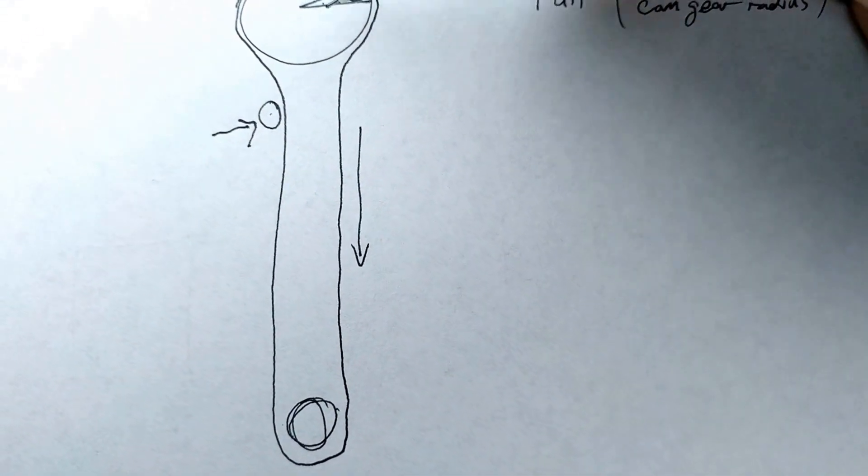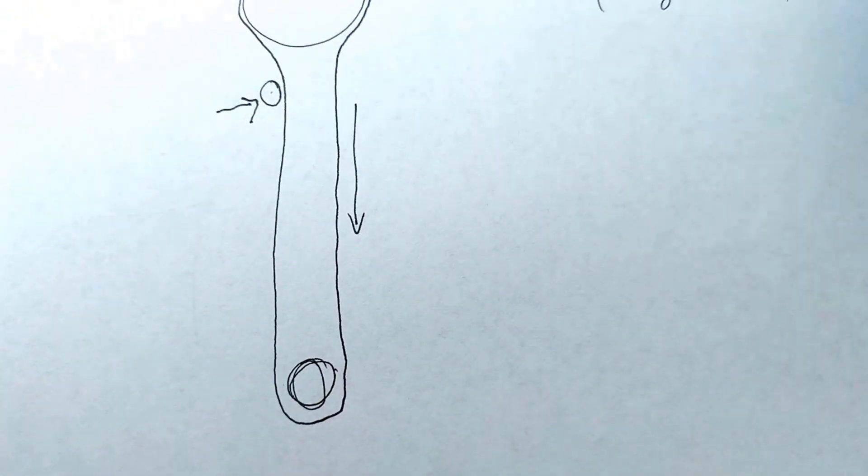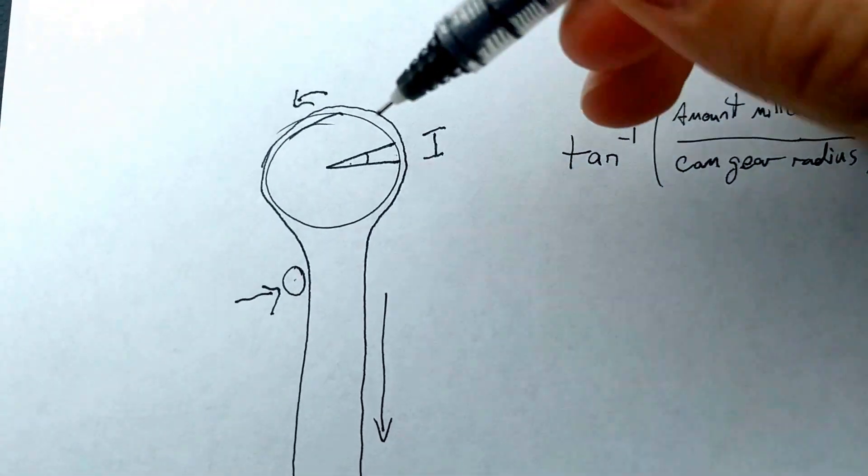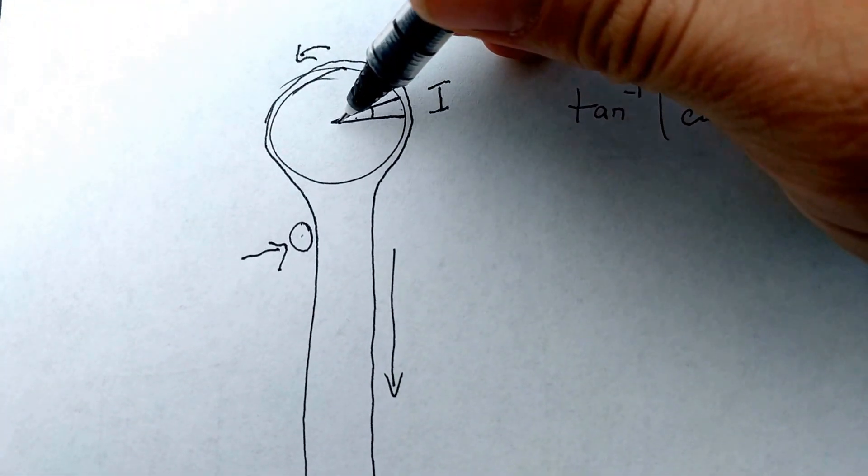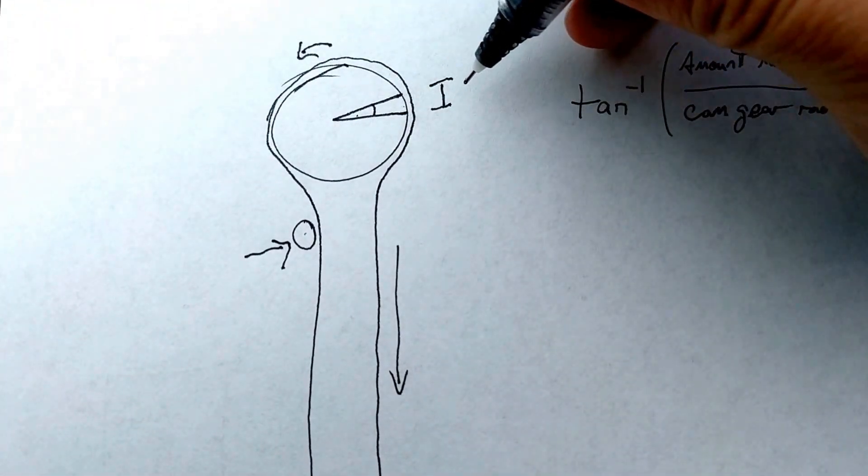The actual distance between your camshaft and your crankshaft doesn't matter. What matters is the radius of your cam gear and the amount that you mill off.